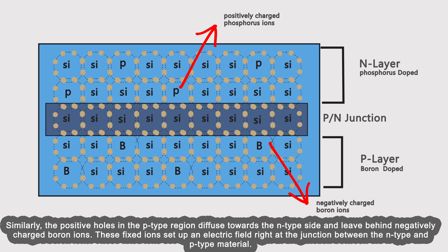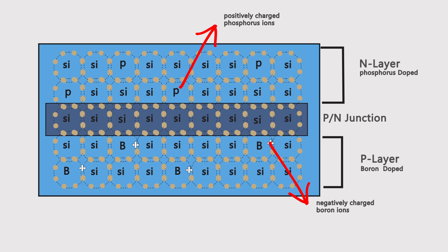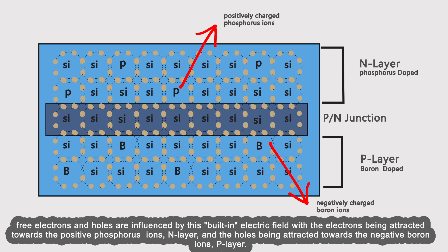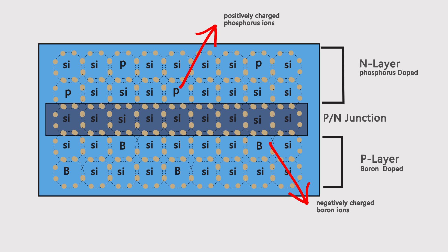Free electrons and holes are influenced by this built-in electric field, with the electrons being attracted towards the positive phosphorus ions in the n-layer and the holes being attracted towards the negative boron ions in the p-layer. So if we want to summarize this working principle in a simpler way, please follow the next animation.